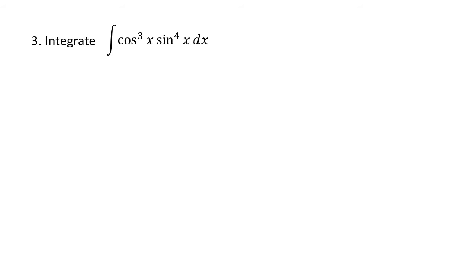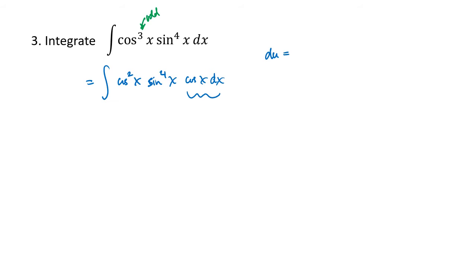In this next example, we look at our powers of cosine and sine and see that only one of them is odd, so we don't have the choice we had in the previous problem. We're really forced to use the cosine and substitute u equals sine. Our process is to look at that odd power, separate one copy of that function, move it over next to the dx, and then substitute u equals the other function. In order to get du equal to cosine of x dx, we need u equals sine of x. That means everything else in the integral has to be in terms of sine of x.